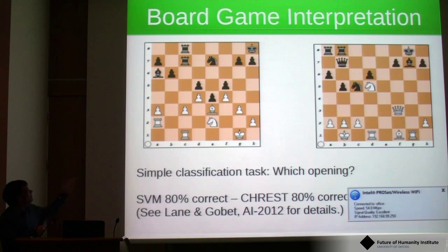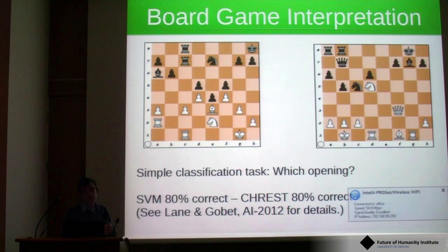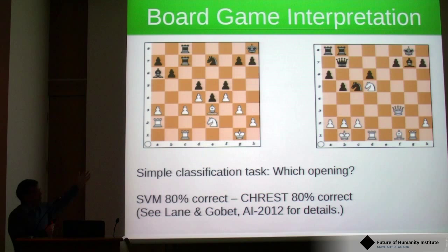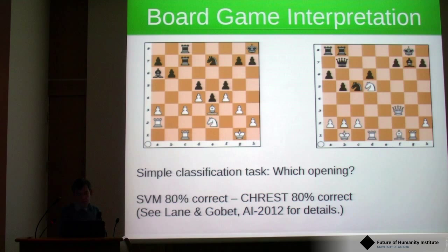Every chess game begins with the first few sequences which define an opening. Things are a little vaguer when it gets to this state, but it's still possible, and human experts are quite good at saying what opening any position came from. We compared this with a statistical learner, the support vector machine, and found that they got more or less the same proportion correct.